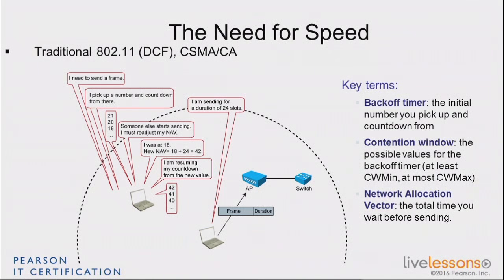Some will tell you that's not exactly how it works. In fact, at the beginning of each frame there is a duration field that tells you how long the frame is going to take to be sent. So if you read that value at the beginning of the frame, instead of listening until the frame is gone, you know exactly how long to wait. You add that number to your countdown, then count down from the top — you don't need to keep listening because you know someone is sending while counting. Both ways describe the same principle: you let the frame pass and resume countdown from where you stopped.